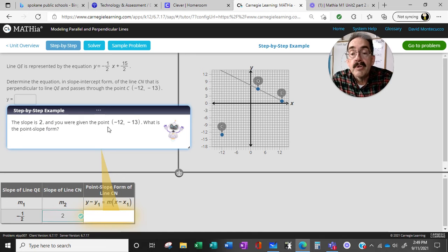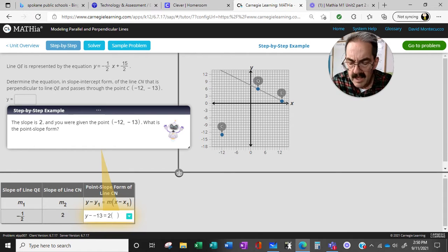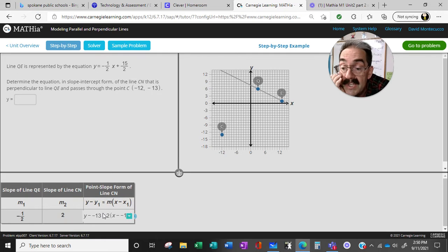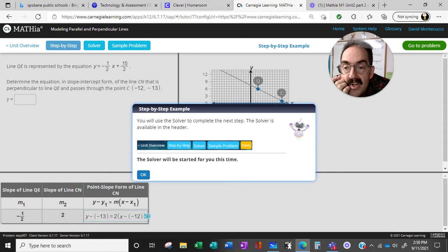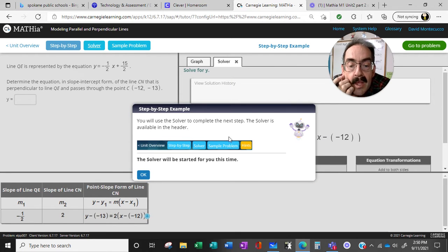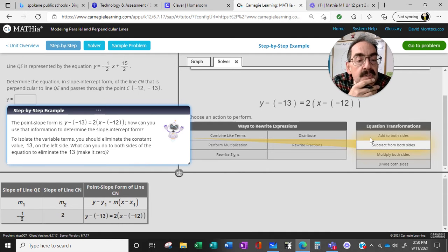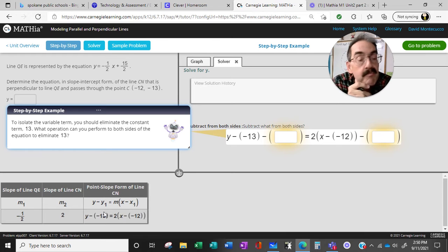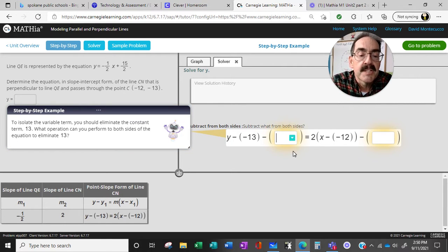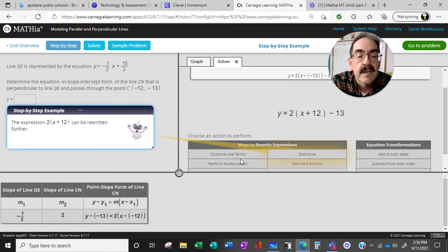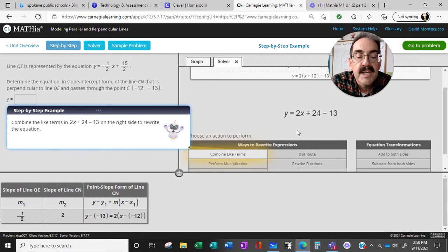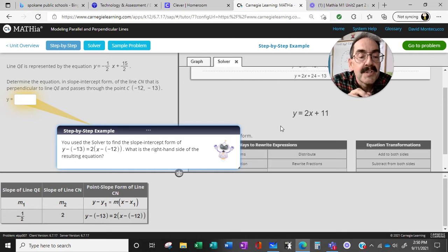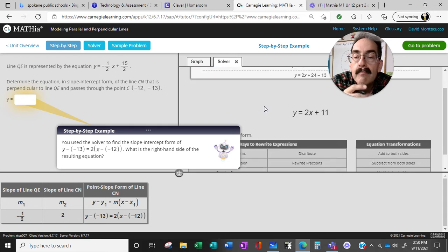Now the slope is 2. You were given the point negative 13, comma, negative 12. What is the slope in the slope intercept form? So Y minus negative 13 equals M which is 2, parenthesis, X minus negative 12. Now I don't think it's going to count it right. You can use the solver. So let's try the solver. The solver. Subtract from both sides. So minus a minus. Oh, it did take it. It put the parenthesis in for us. Awesome. Minus a minus is a plus. So we're going to go minus 13. All right. Rewrite the signs. Now we're going to distribute the 2 times the X. Combine like terms. And we're good to go. Awesome.